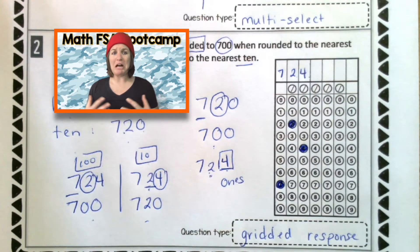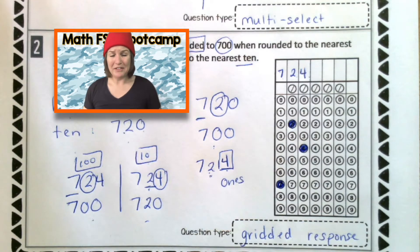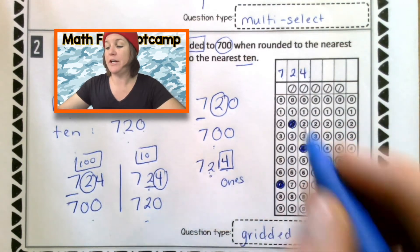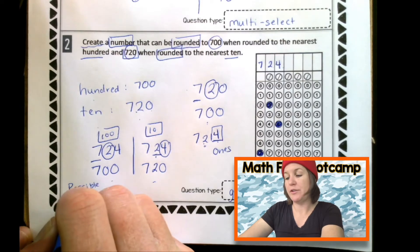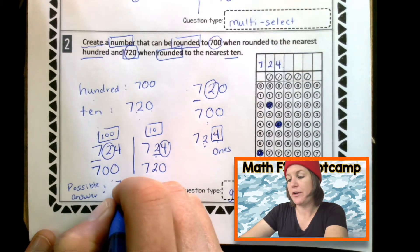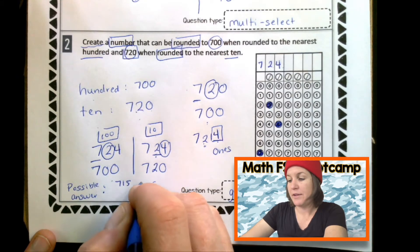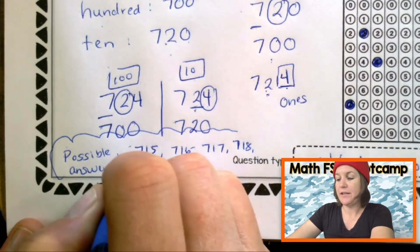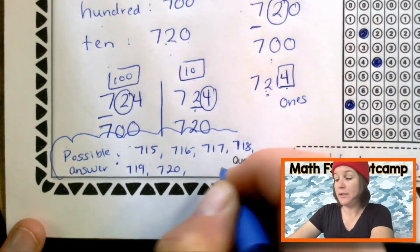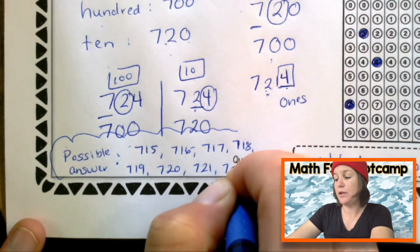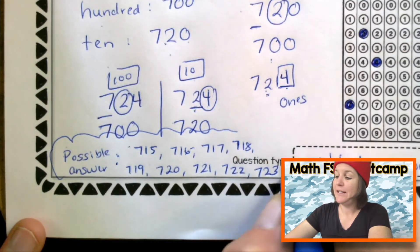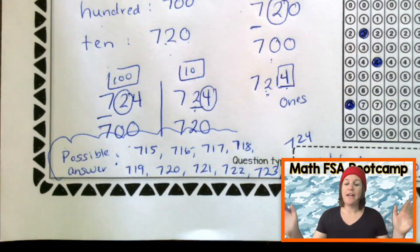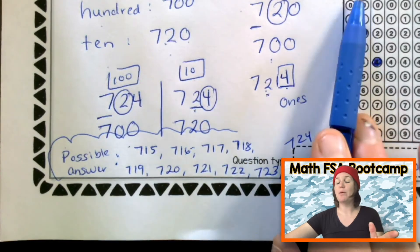Now, I know some of you might be thinking, Ms. McCarthy, I had another answer. It's not 724. And there are indeed more answers than it could be. So, let me go ahead and list out the possible answers for you right over here. Possible answers. So, let's see if your answer is here. The first answer that would work would be 715. 716 would also work. 717, 718, 719, 720. We already talked about that one. 721, 722, 723, and 724. All of those would work as possible answer choices. So, if you have any of those, then you are correct as long as you bubbled it in appropriately too.